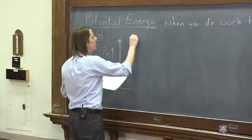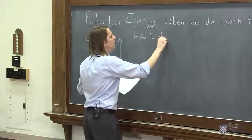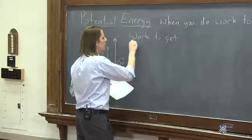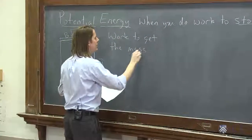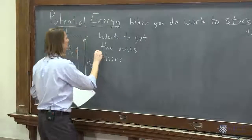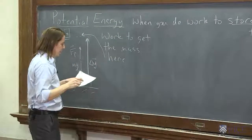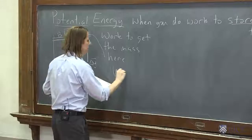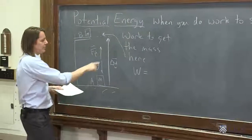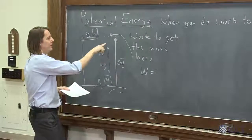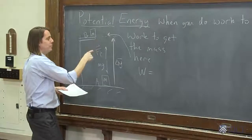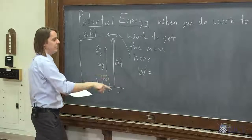So let's see. The work to get the mass here is work equals F dot displacement, right? So displacement vector is this way, the force is this way. It has the magnitude Mg, so it's Mg times delta y.